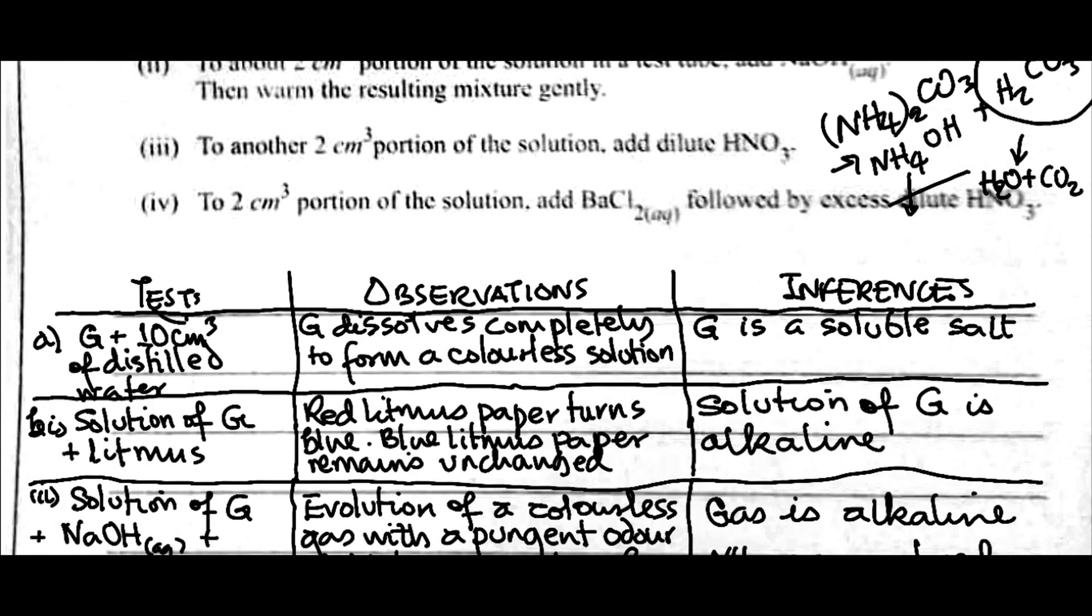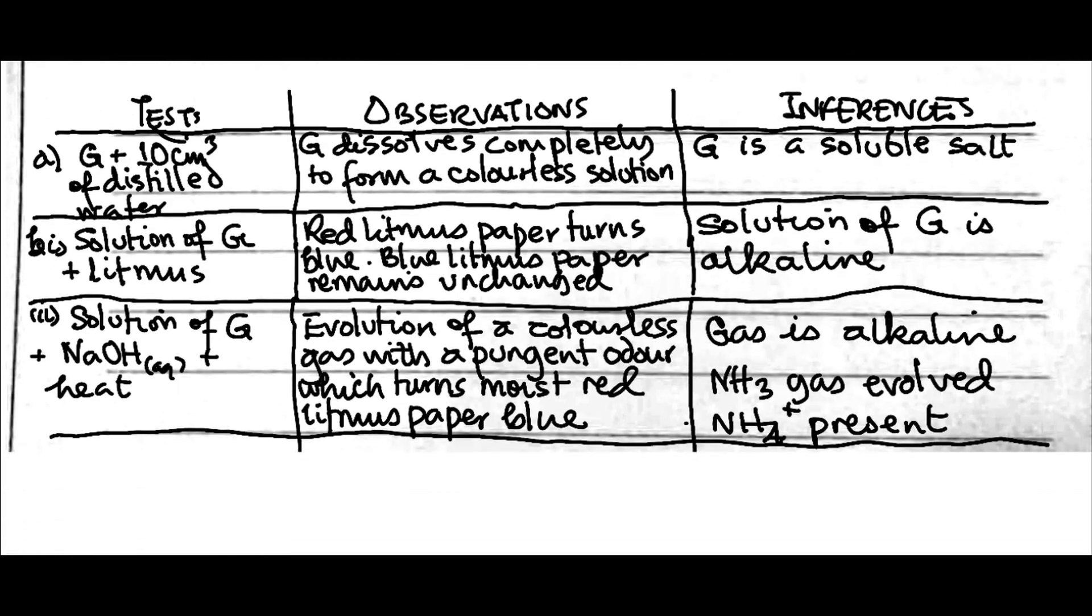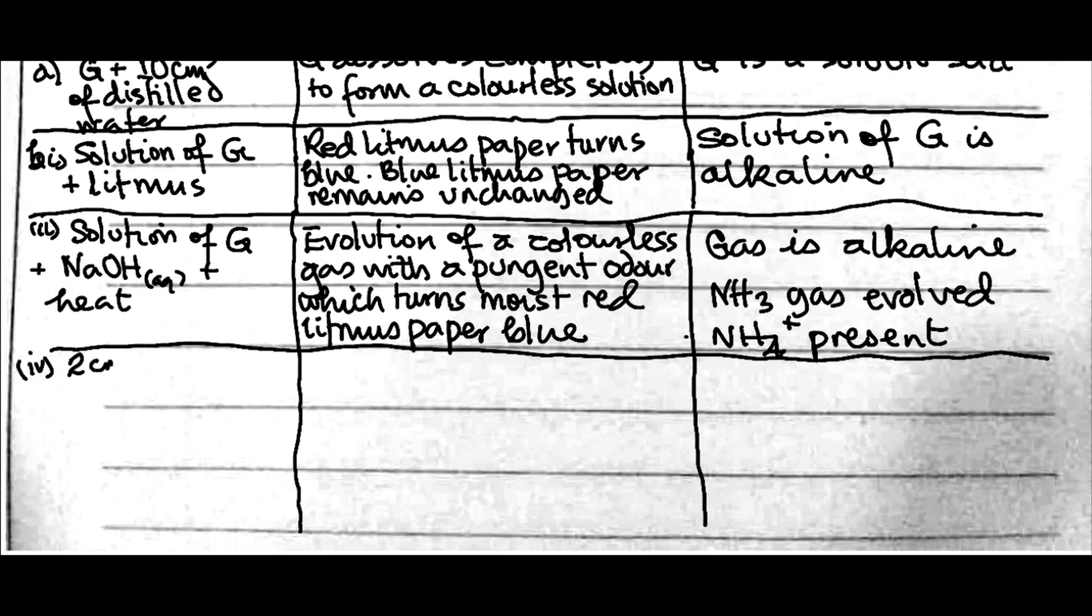The next question. To another 2 cm³ portion of the solution, add dilute HNO3. Where the last question says, to another 2 cm³ portion, you should add BaCl2. So, that's 3. 2 cm³ portion of solution of G plus dilute HNO3. HNO3 is an acid. And this is a trioxocarbonate(IV). When you add an acid to a solution of a trioxocarbonate(IV), either the solid form of trioxocarbonate(IV) or the solution of trioxocarbonate(IV), what do you expect? Acid plus trioxocarbonate(IV) will give us a form of what? Salt, water and carbon dioxide. And carbon dioxide will be seen in form of what? Of effervescence.